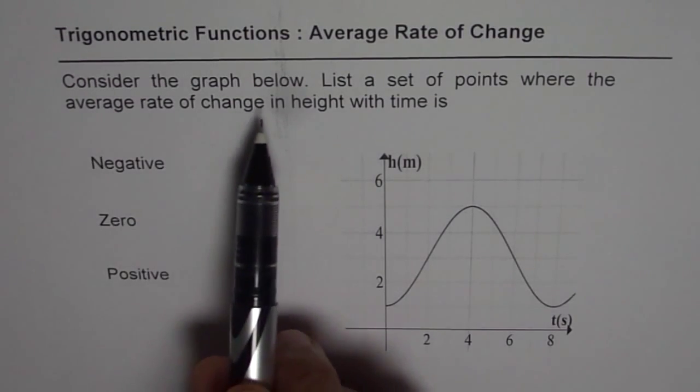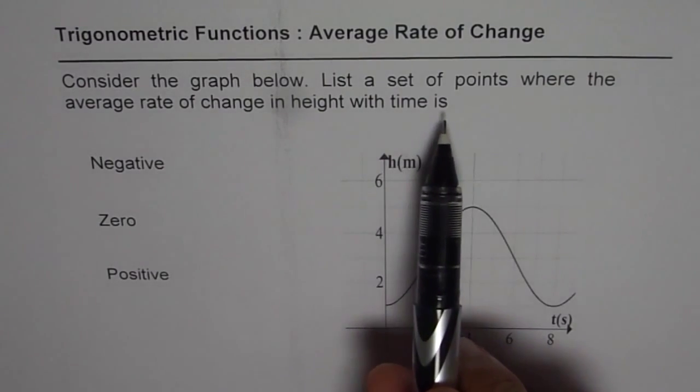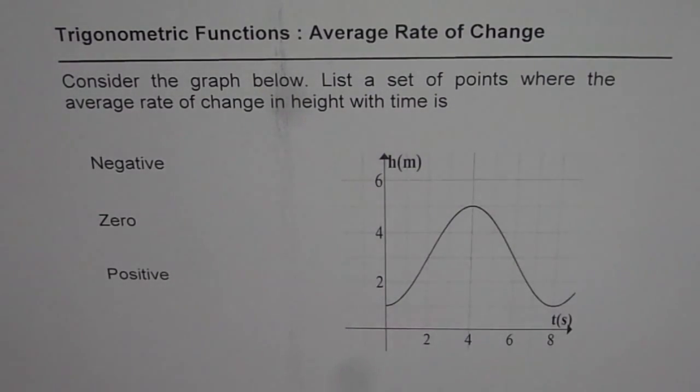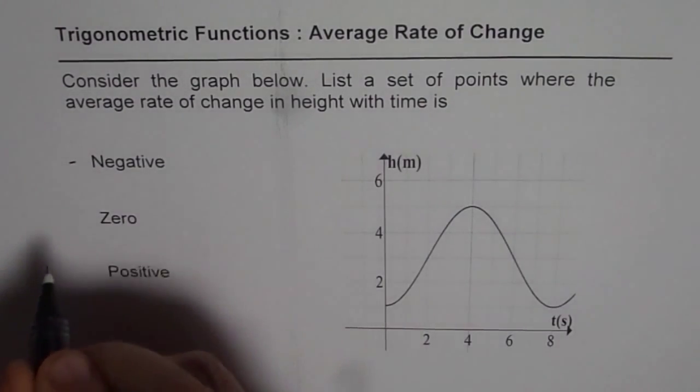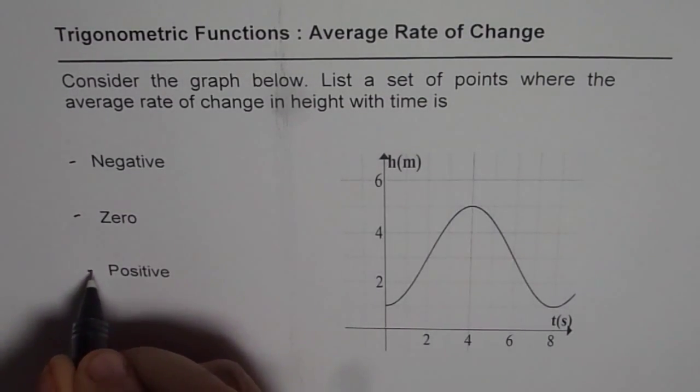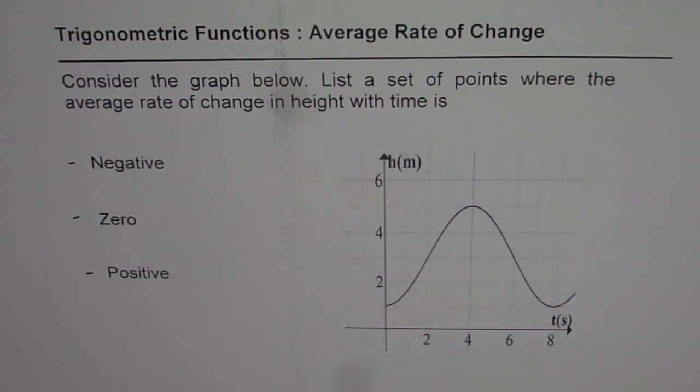So the question here is: consider the graph below, list a set of points where the average rate of change in height with time is negative, zero or positive.